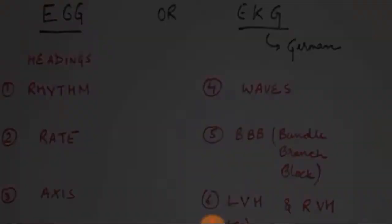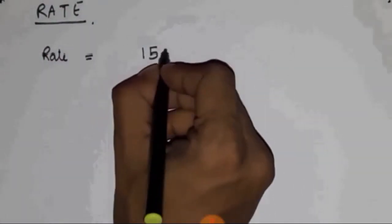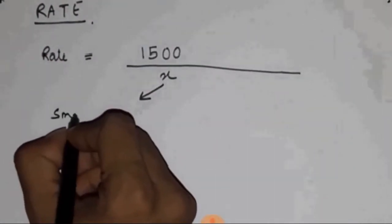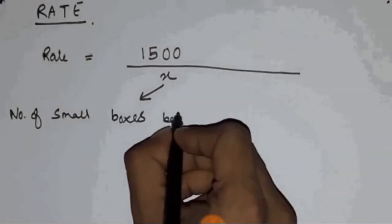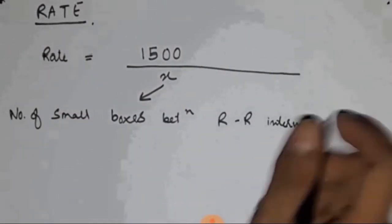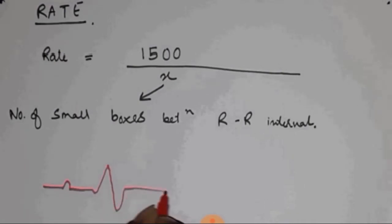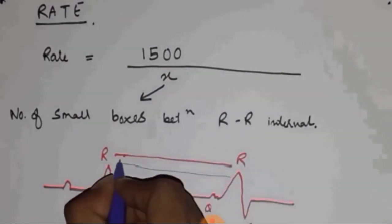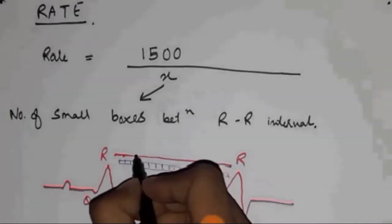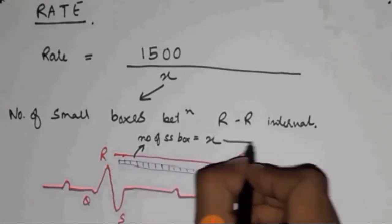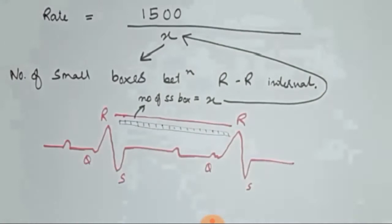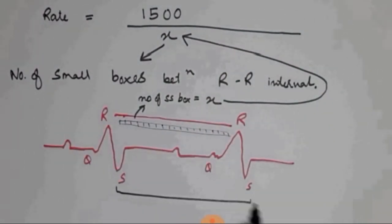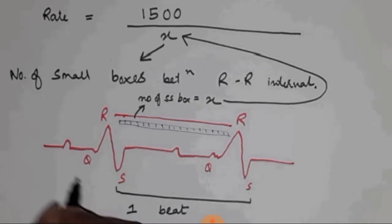Let's look at the rate first, how to calculate. This is given by the formula 1500 by X, referring to the number of small boxes between the R-R interval. Here we have the ECG curve. I am marking them as QRS. The R-R interval, we are going to count a small number of boxes, which is the X, and putting that into the formula. We take the R-R interval because it refers to one beat, or one heartbeat, or one cardiac cycle, or lub-dub.